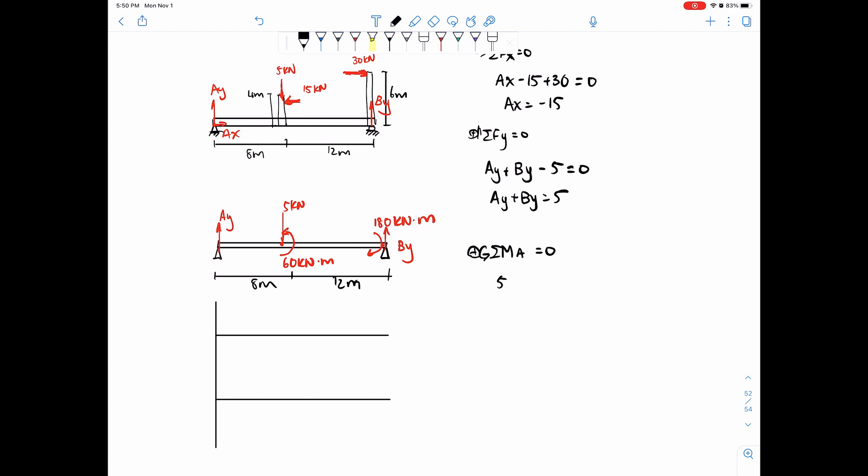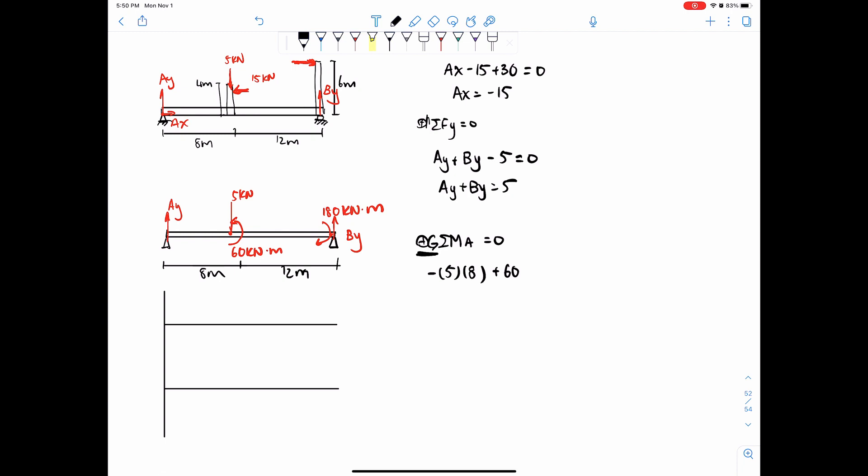So we have 5 times 8, and that's spinning it clockwise, so it's negative, plus 60, because this is spinning it in the counterclockwise direction, and we set that equal to positive. And then finally, we have minus 180, spinning that clockwise. And then plus 20 times By, the distance and then the reaction. So once we have that, we can simplify, so minus 40, plus 60, minus 180, plus 20 By, and this would equal to 20 minus 180 plus 20 By equals 0.